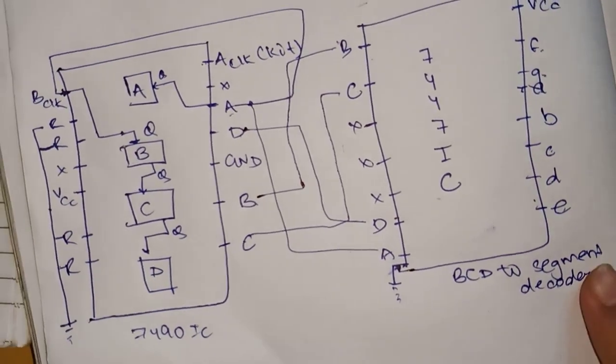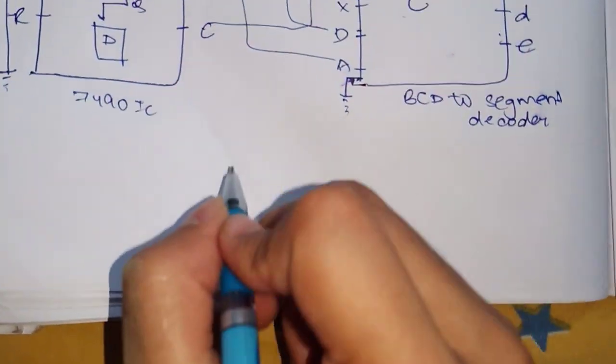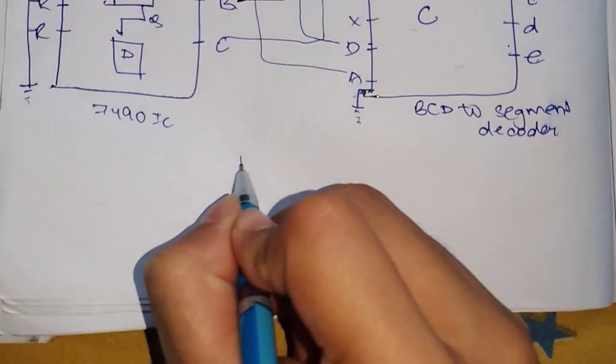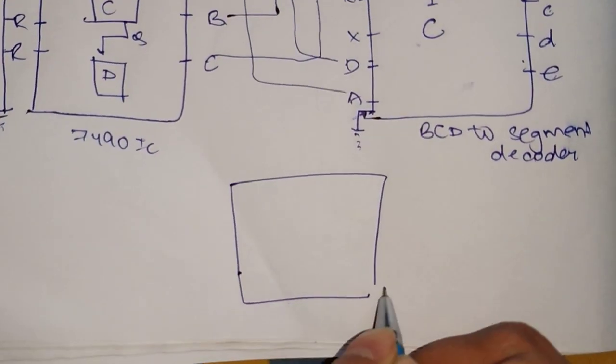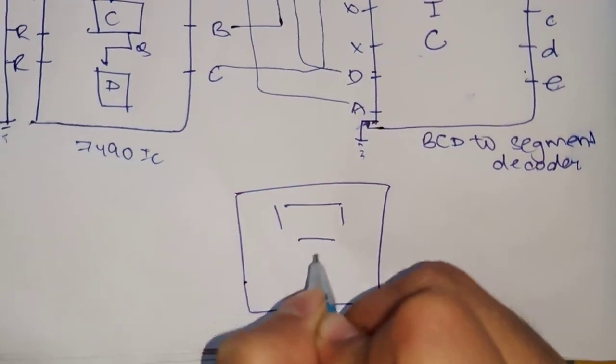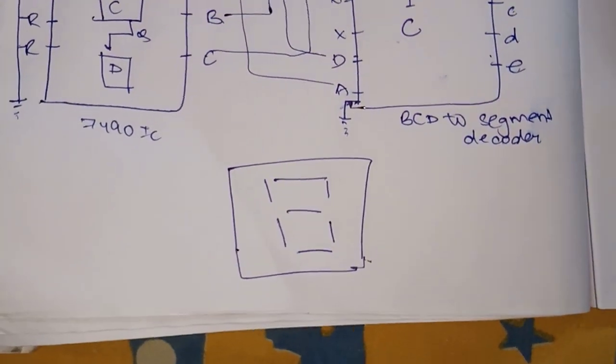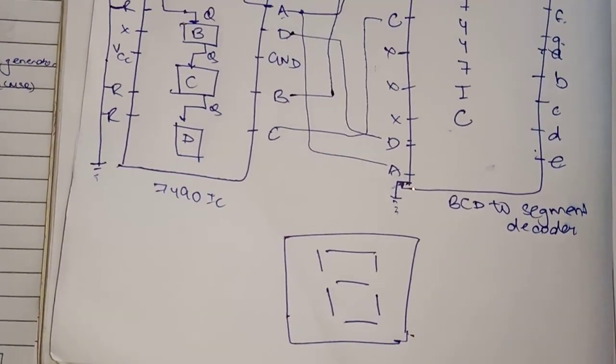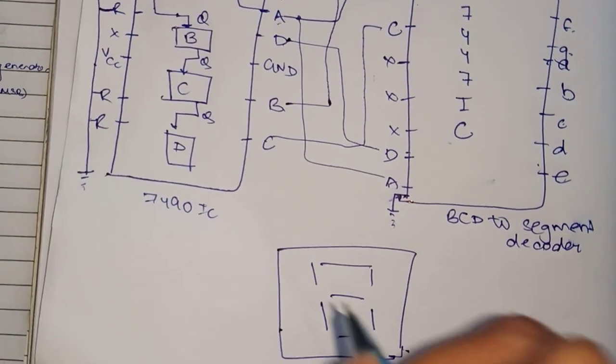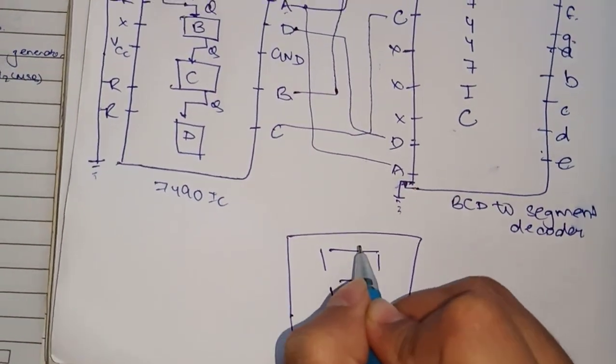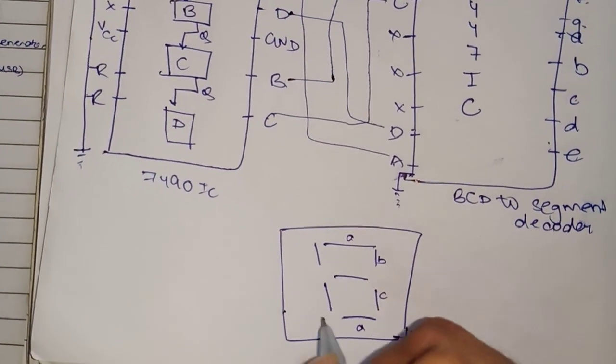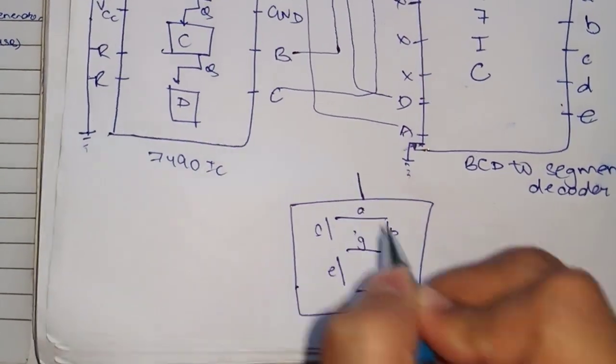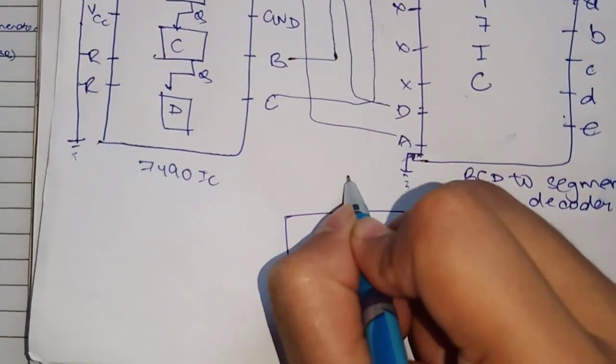After this you have to make the pin diagram of 7-segment. In 7-segment, just draw it like this. I'm drawing in rough—be careful about the way you draw in exam, because practical exams need to be very neat and clean. The way you present the things, the teacher should understand it. Draw A, B, C, D, E, F, G. Between these, these are commons.